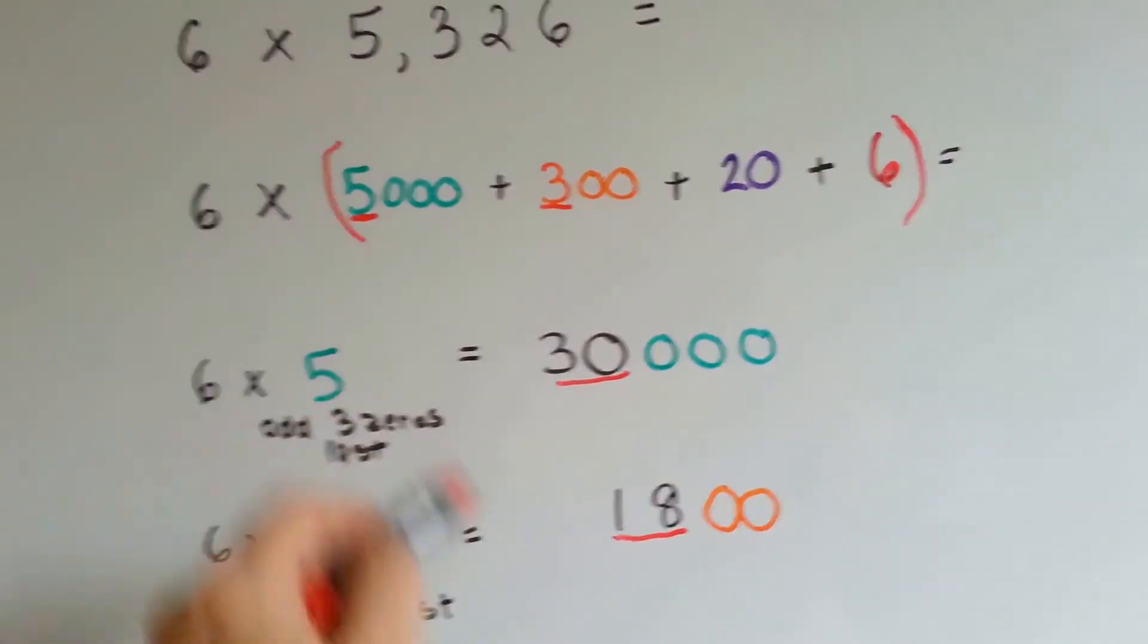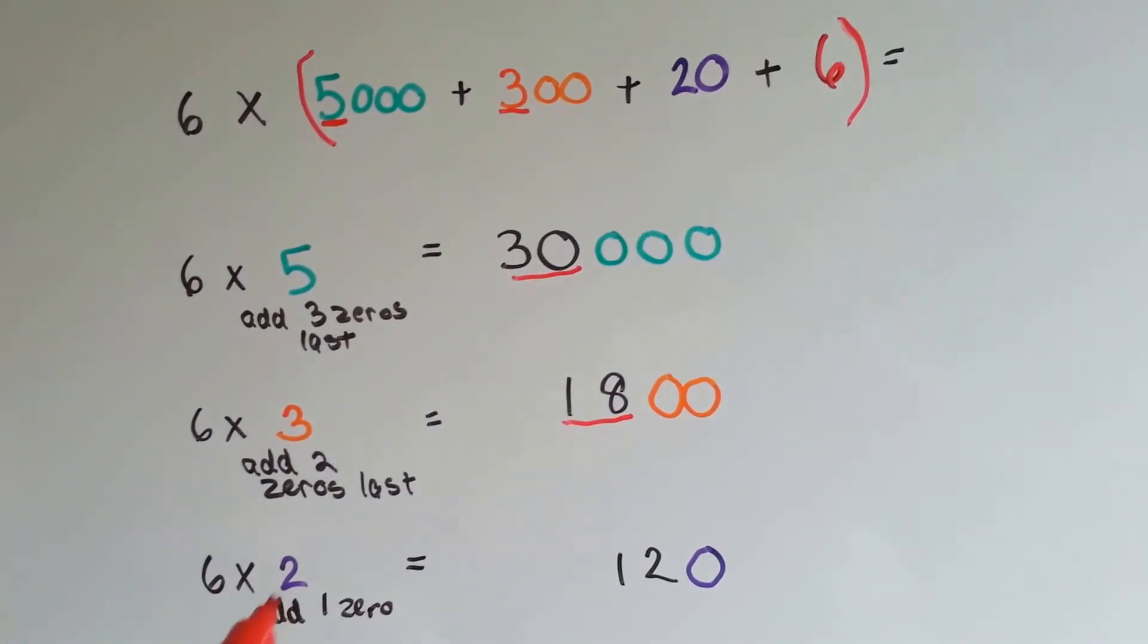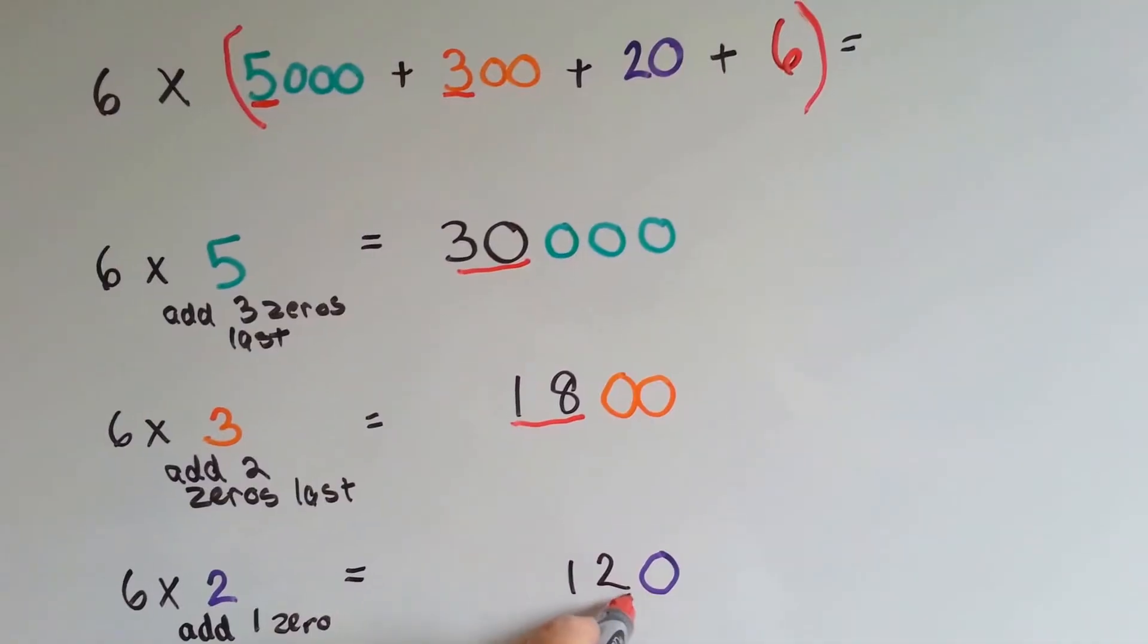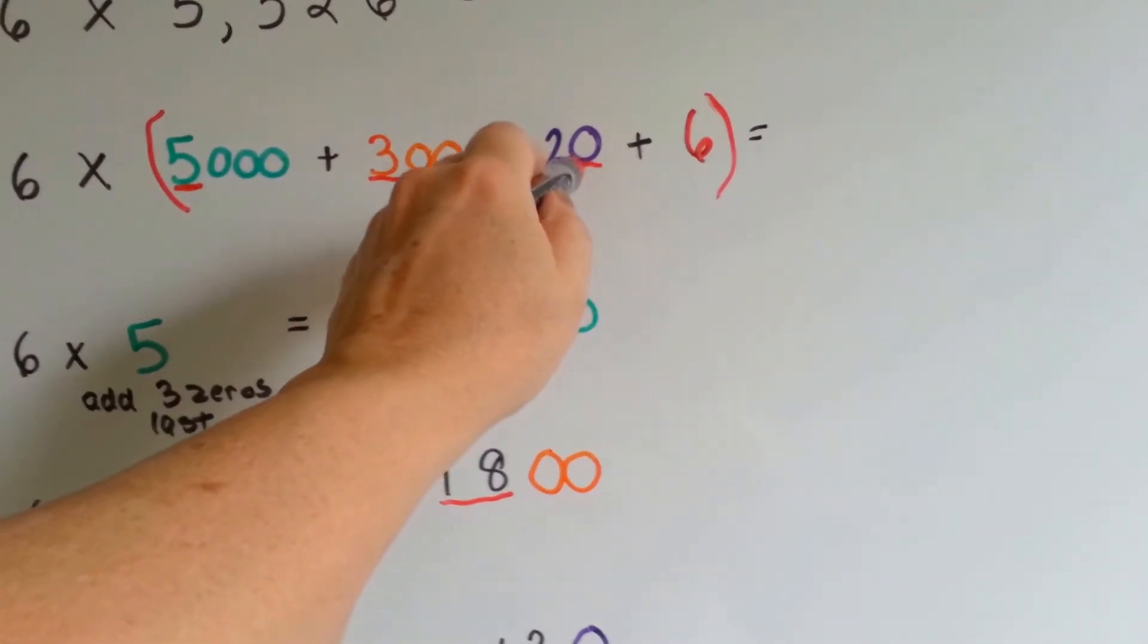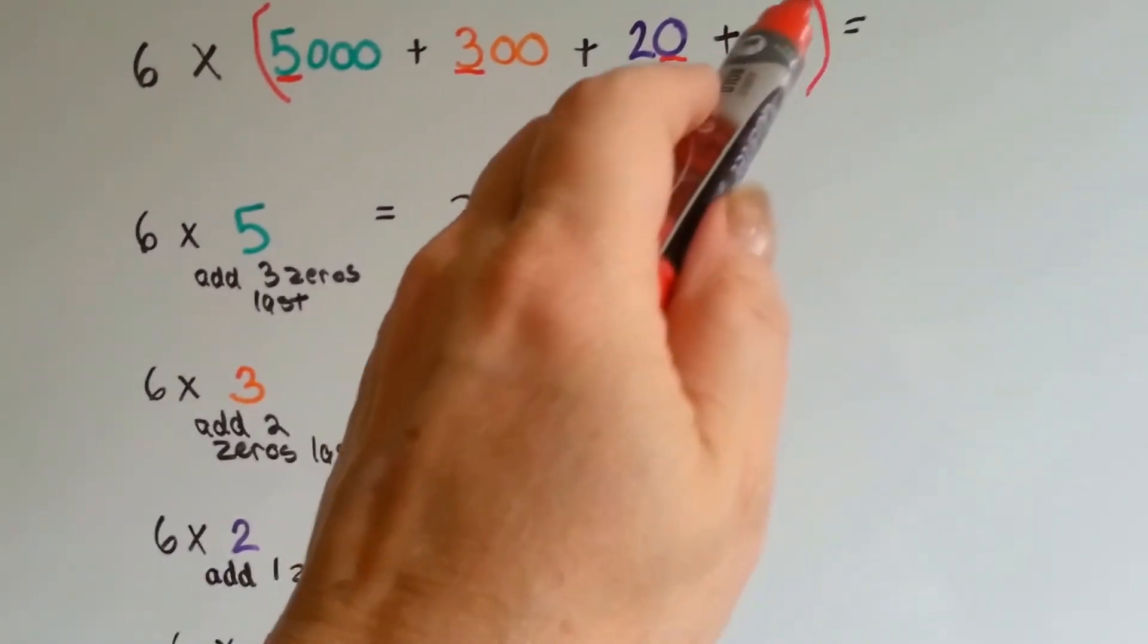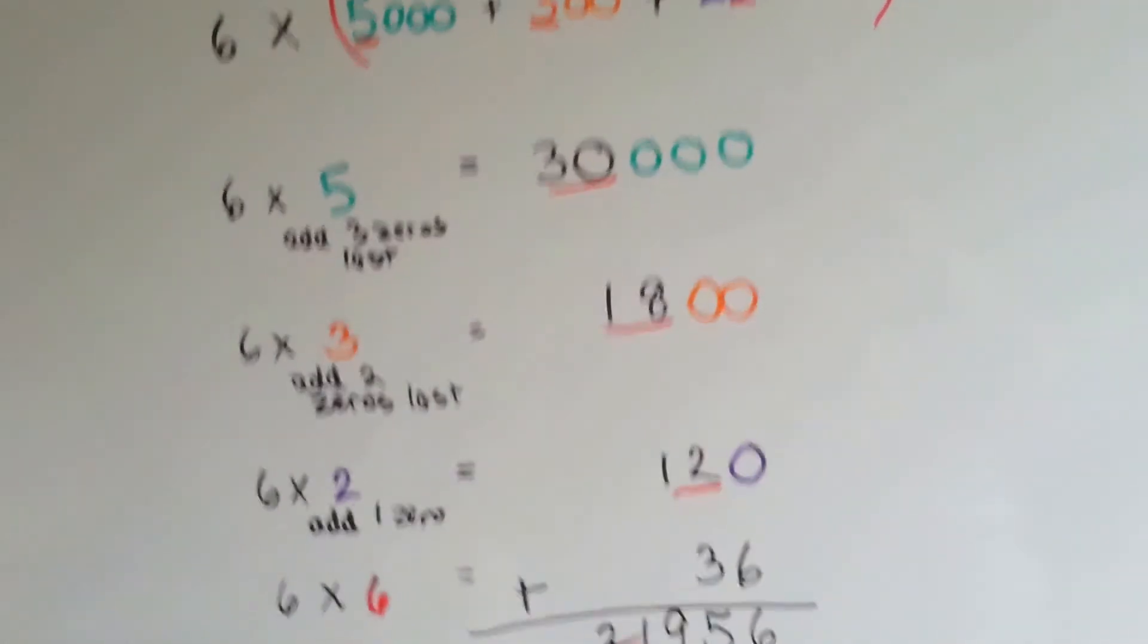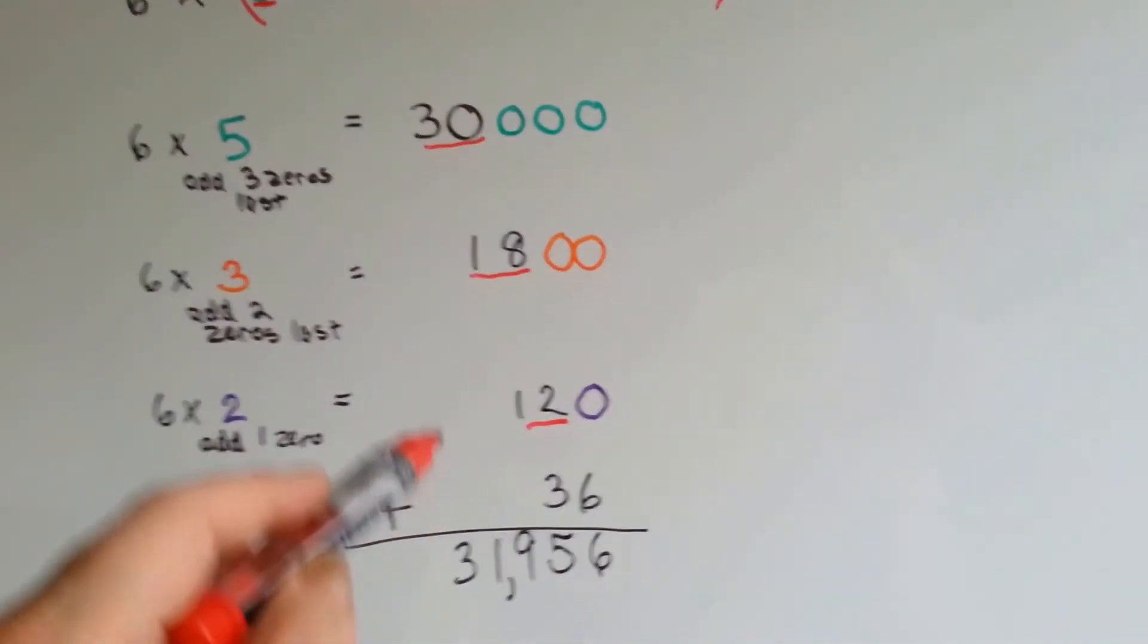We do 6 times 3, which is 18, and then add the two zeros. Then we're going to do 6 times 2, which is 12, and add the 1, 0 from right here. It turns it into 120. Then we're going to do the 6 times 6. It's the last one. 6 times 6 is 36. Now we get to add it all up.